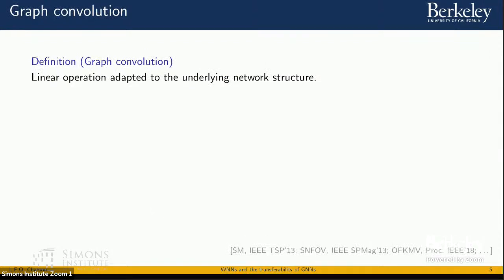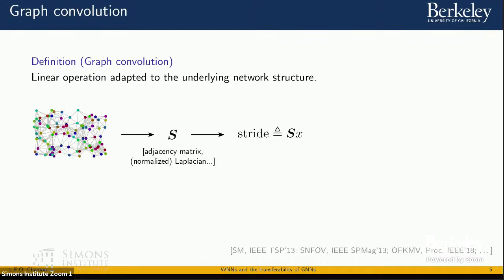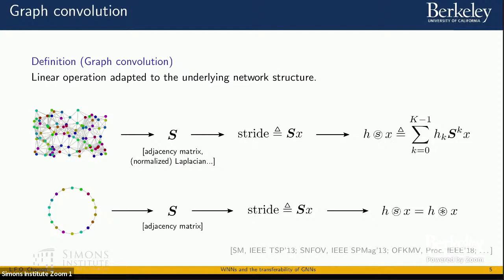This brings us to the idea of graph convolution. Graph convolutions are defined by replacing the regular convolution stride with one adapted to the underlying network — using, for example, the adjacency matrix or Laplacian to induce a linear operation as the stride of our convolution. We define the convolution by aggregating different strides throughout our data. For certain particular choices of graphs, we even recover the classical convolution, so graph convolutions are a generalization of regular convolutions to network settings.